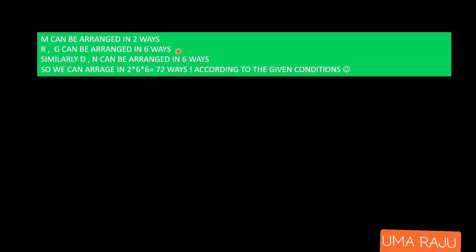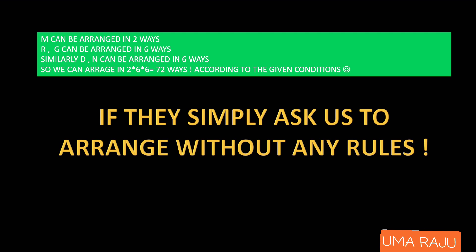So Ma can be arranged in 2 ways, Ri-Ga in 6 ways, and Dha-Ni also in 6 ways. Therefore the total number of arrangements is 2 × 6 × 6 = 72, according to the given conditions and rules. And if they simply asked us to arrange without any rules, think about how many ways that would be!